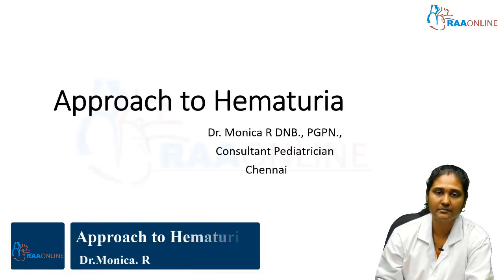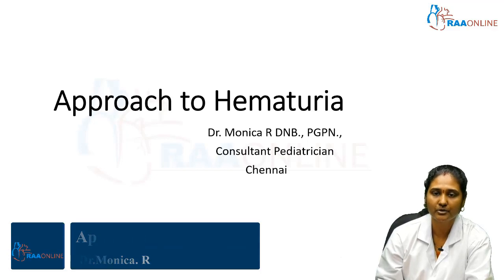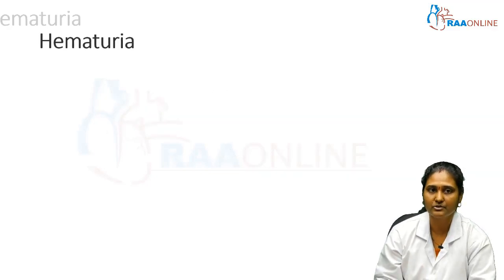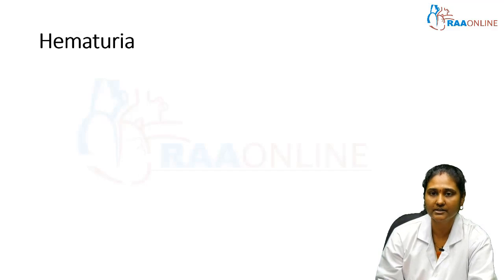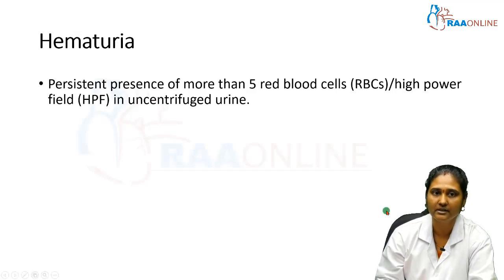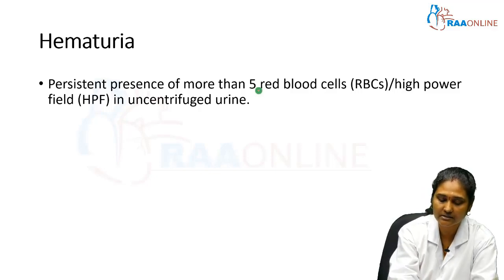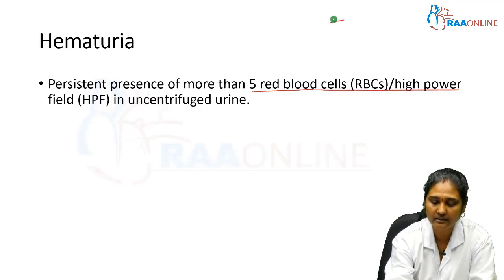Welcome to the Raw Online Teaching Program. Today's topic of discussion is the approach to hematuria. Before moving on to how to approach a child with hematuria, we need to know certain definitions in context. Hematuria is defined as the persistent presence of more than 5 RBCs per high power field in an uncentrifuged urine sample. This need not always be clinically significant.